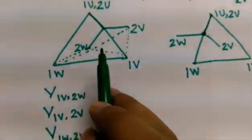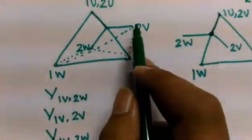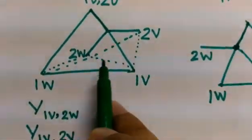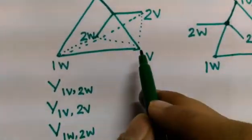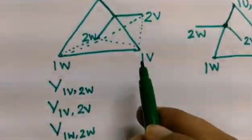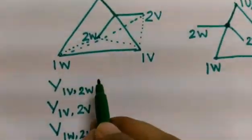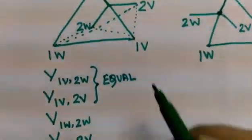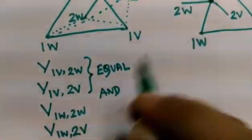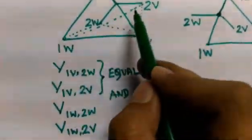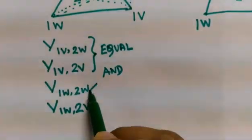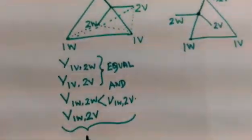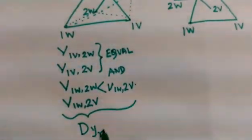If this is a Dyn11 transformer, you can see from the phasor that V(1V–2V) equals V(1V–2W) — these two voltages will be equal. And V(1W–2W) will be less than V(1W–2V). So if V(1V–2V) equals V(1V–2W), and V(1W–2W) is less than V(1W–2V), then you can conclude that this transformer is a Dyn11 transformer.